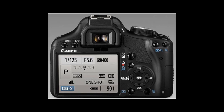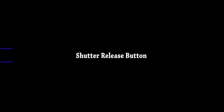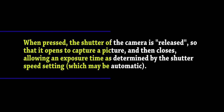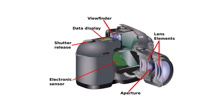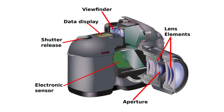Shutter Release Button. The shutter release button is the mechanism that releases the shutter and therefore enables the ability to capture the image. The length of time the shutter is left open or exposed is determined by the shutter speed.